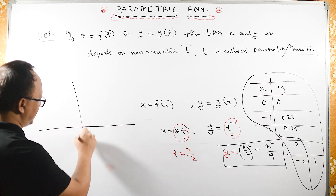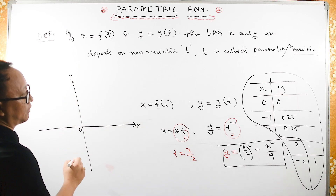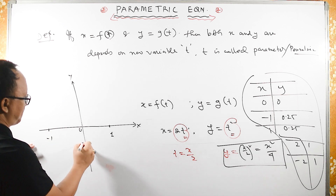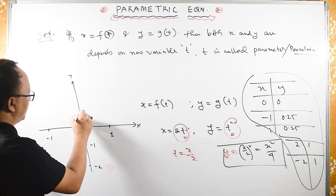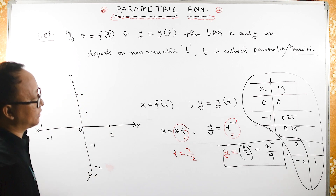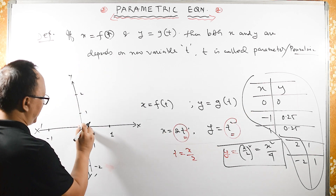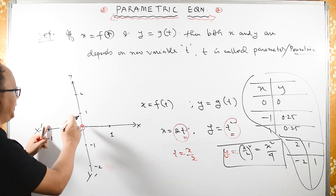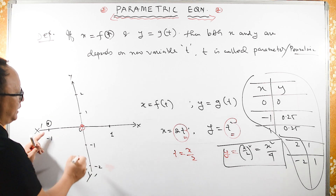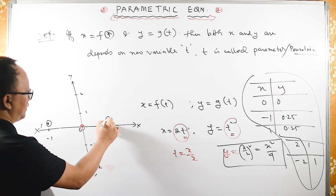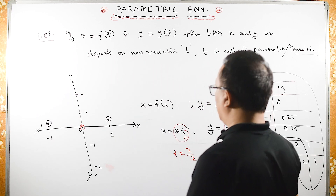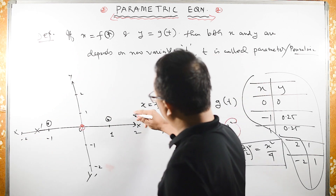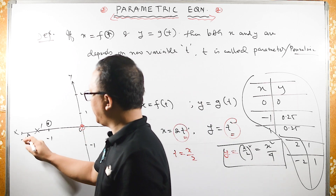Let us set up the x and y axes. On the x-axis we have 0, minus 1, plus 1, and further out minus 2, plus 2. The point (0, 0) is at the origin. When x equals minus 1, y is 0.25 — plotted just above the x-axis. When x equals 1, y is 0.25 — same height. When x equals 2, y goes up to 1. Similarly, when x equals minus 2, y is also 1.